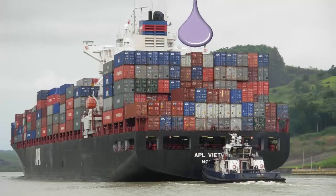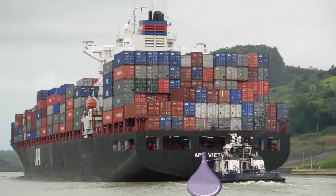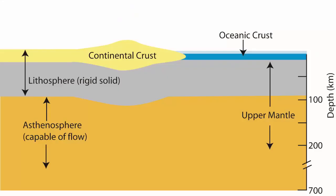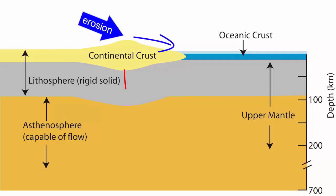When cargo is added to a cargo ship, it sinks lower into the water. When the cargo is removed, the ship rises. So what happens when the tops of mountains are eroded? Material is removed, so the crust rises upwards.